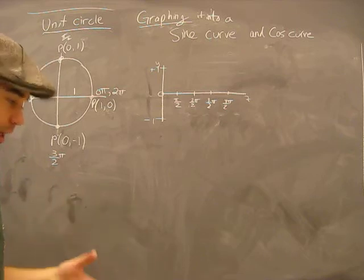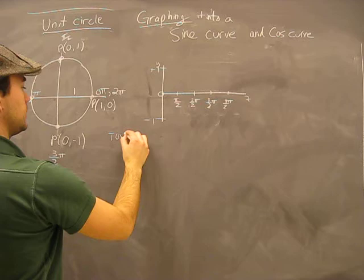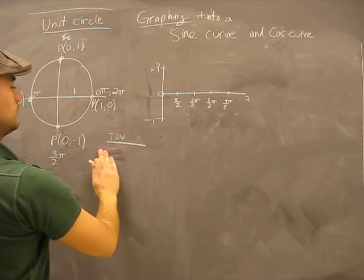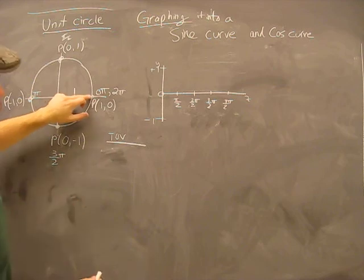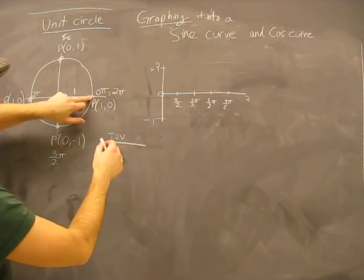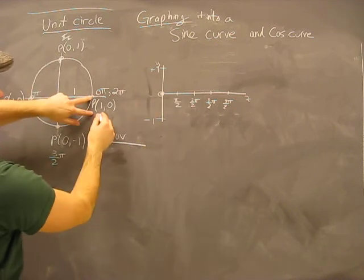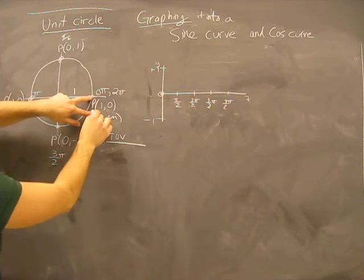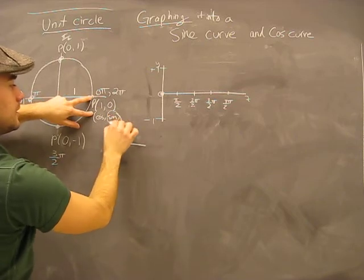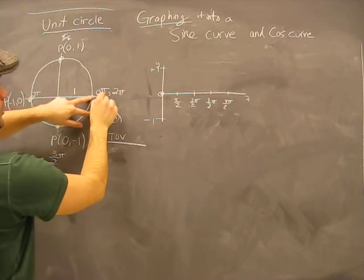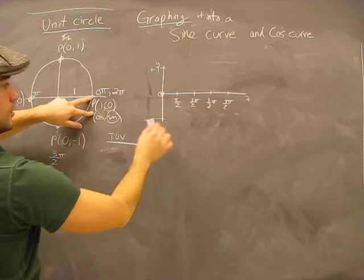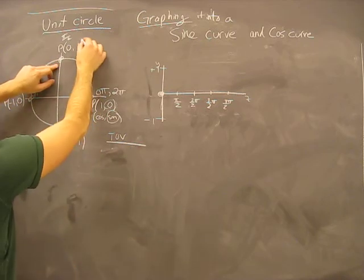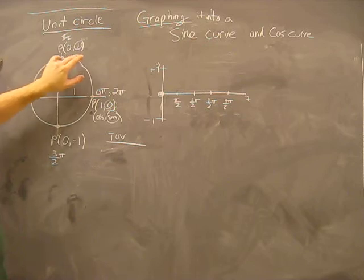Let's plot our points — back to grade eight table of values. At zero, we're at zero pi, and our P for sine shows a zero, so at zero pi we're at a height of zero. Remember, sine is the second term in our point — our y-value. So at any point P with a number, we're always dealing with the second value because we're talking about the sine curve.